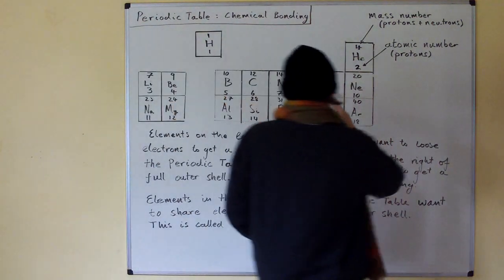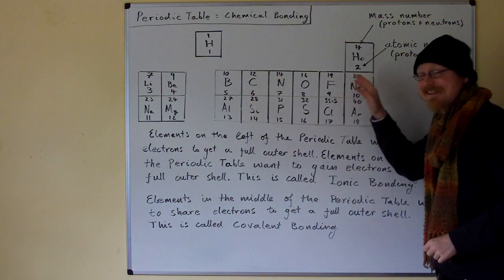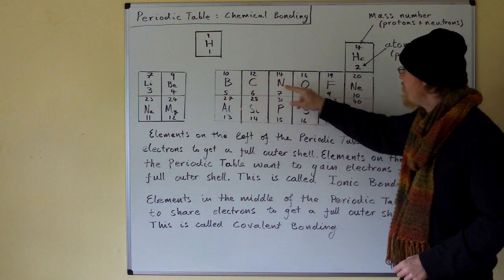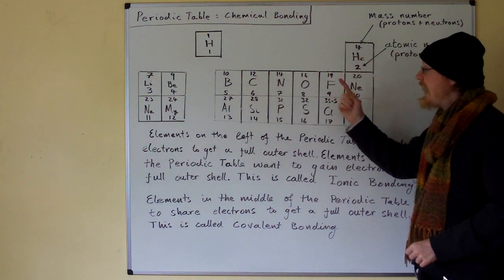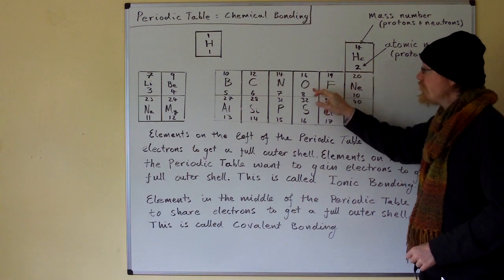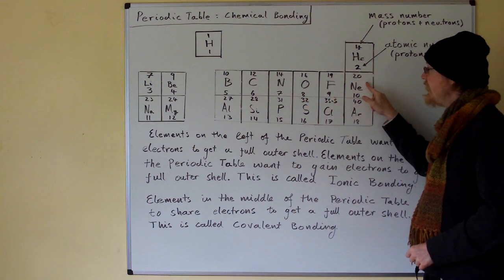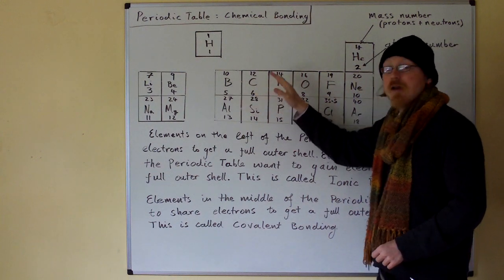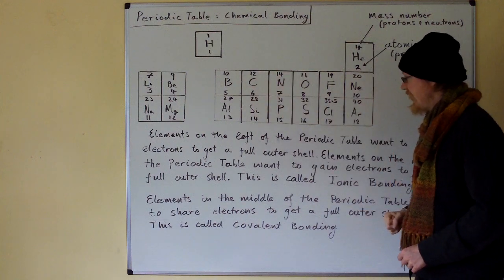When you're on the right of the periodic table, like fluorine — fluorine has seven electrons in its outer shell — it's easier for fluorine to get one more electron and pretend to be like neon. Oxygen wants to get two more electrons and pretend to be like neon. Nitrogen, carbon, and boron will often share electrons to form full outer shells.